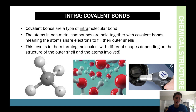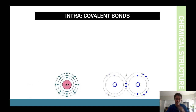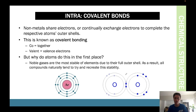Covalent bonds work by sharing electrons. Valence electrons are really important — what atoms want to do is fill their outer shell completely, with every single spot filled. Most outer shells only take eight electrons. So what atoms do is go and share electrons with other atoms to fill their outer shell.